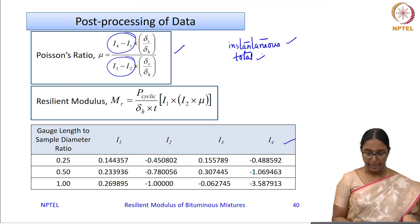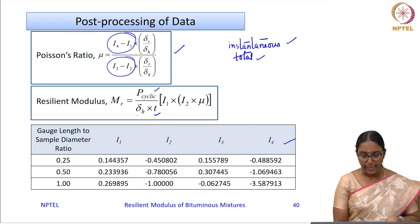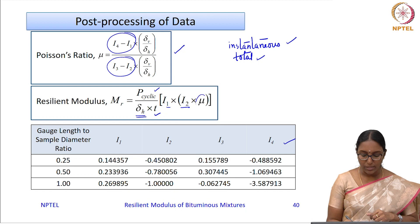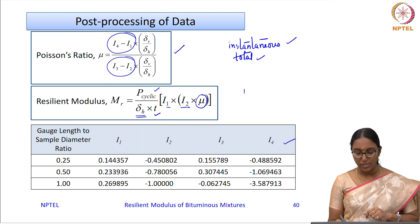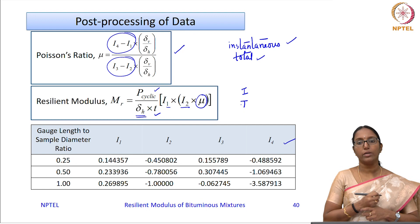The resilient modulus is given by an expression involving P_cyclic (maximum load minus contact load), T (specimen thickness), δH (horizontal recovery), constants I1 and I2, and the Poisson's ratio μ computed from the earlier equation. Using instantaneous μ gives one resilient modulus value, while using total recovery values gives another resilient modulus.